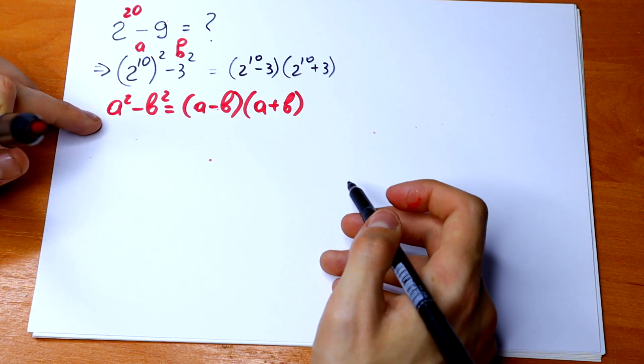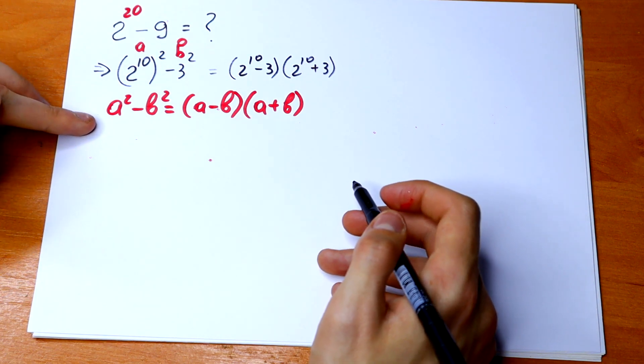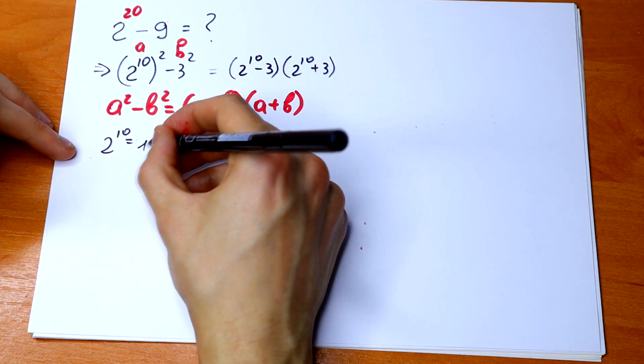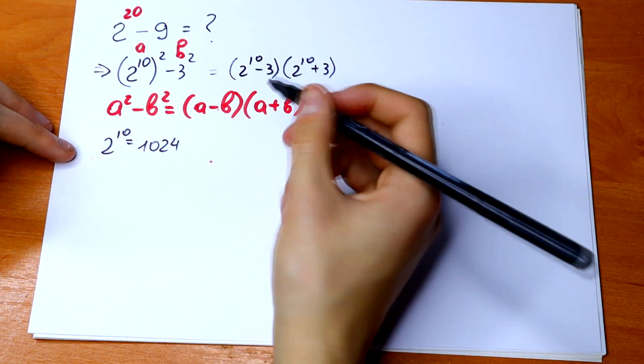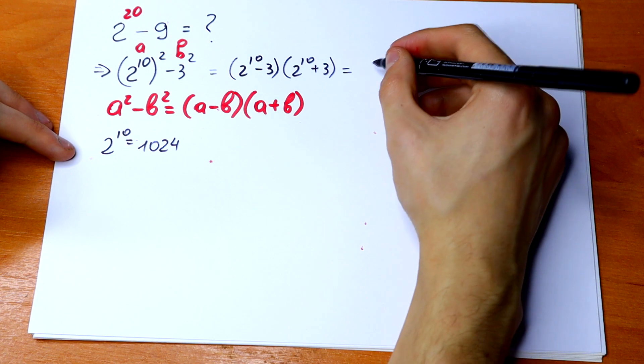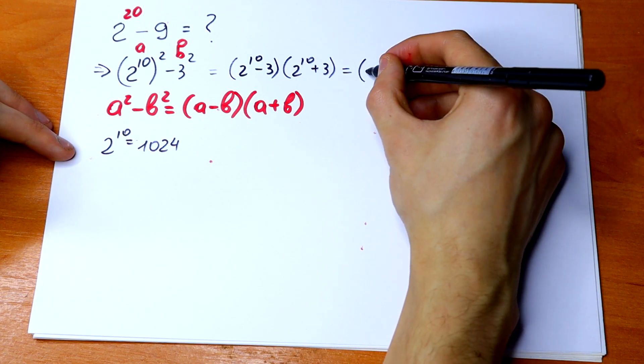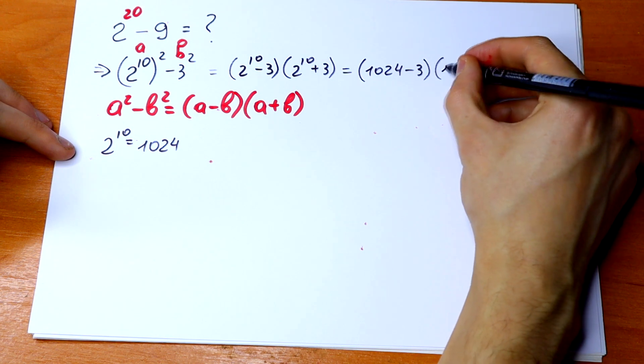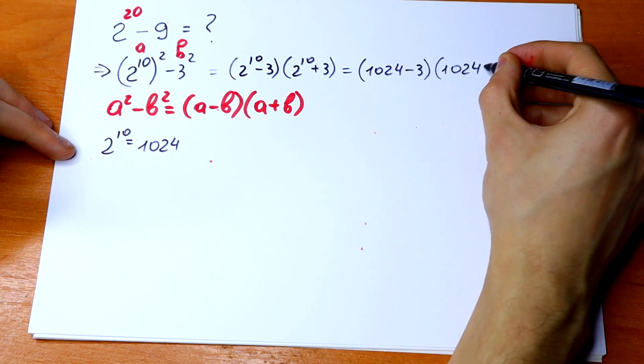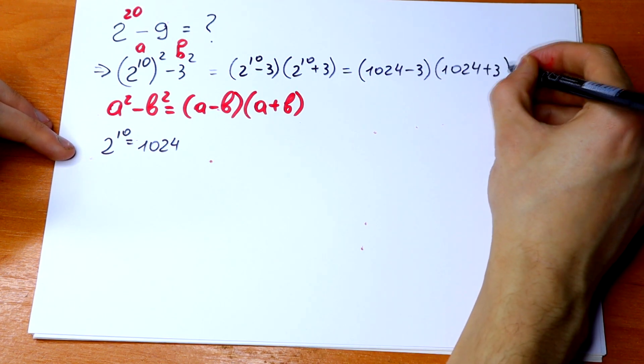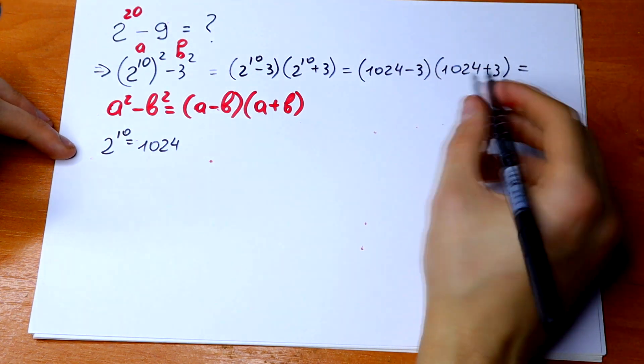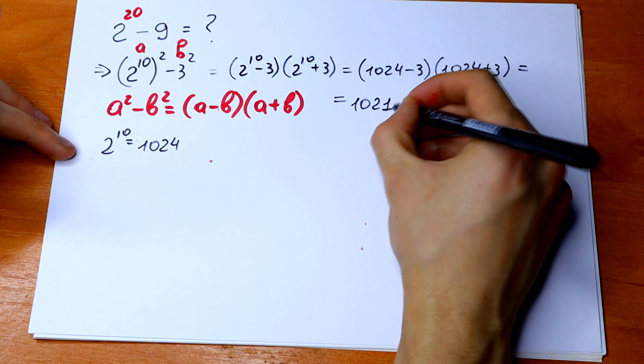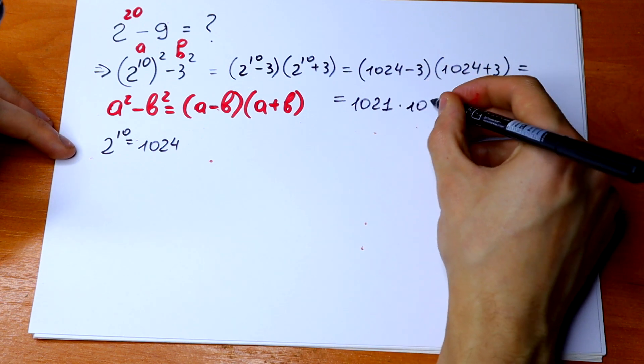Just using this rule. We know that 2 to the 10th power equals 1024, so we can write this as 1024 minus 3, times 1024 plus 3. For sure we can calculate this: 1021 times 1027.